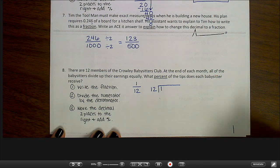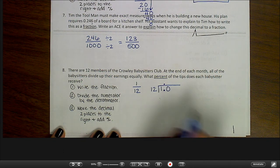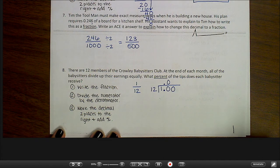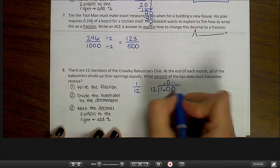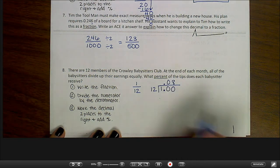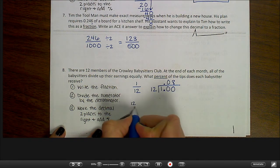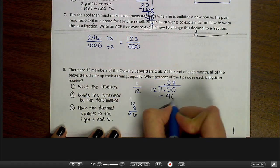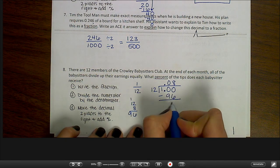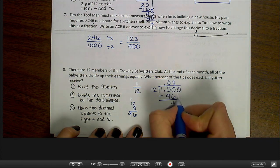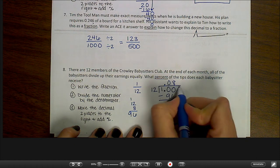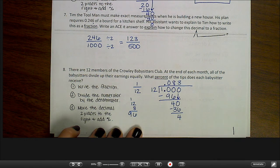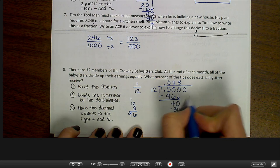And it's really important that we say that correctly. The numerator divided by the denominator is one divided by twelve. Again, I cannot divide twelve into one, so I need to add a decimal and a zero. Twelve does not go into ten, so I need to add another zero. Twelve goes into one hundred eight times. Eight times twelve, I can work that out over here. Eight times twelve is ninety-six. So when I subtract, I get four. Again, I can't just stop. I need to keep going when I have a remainder.